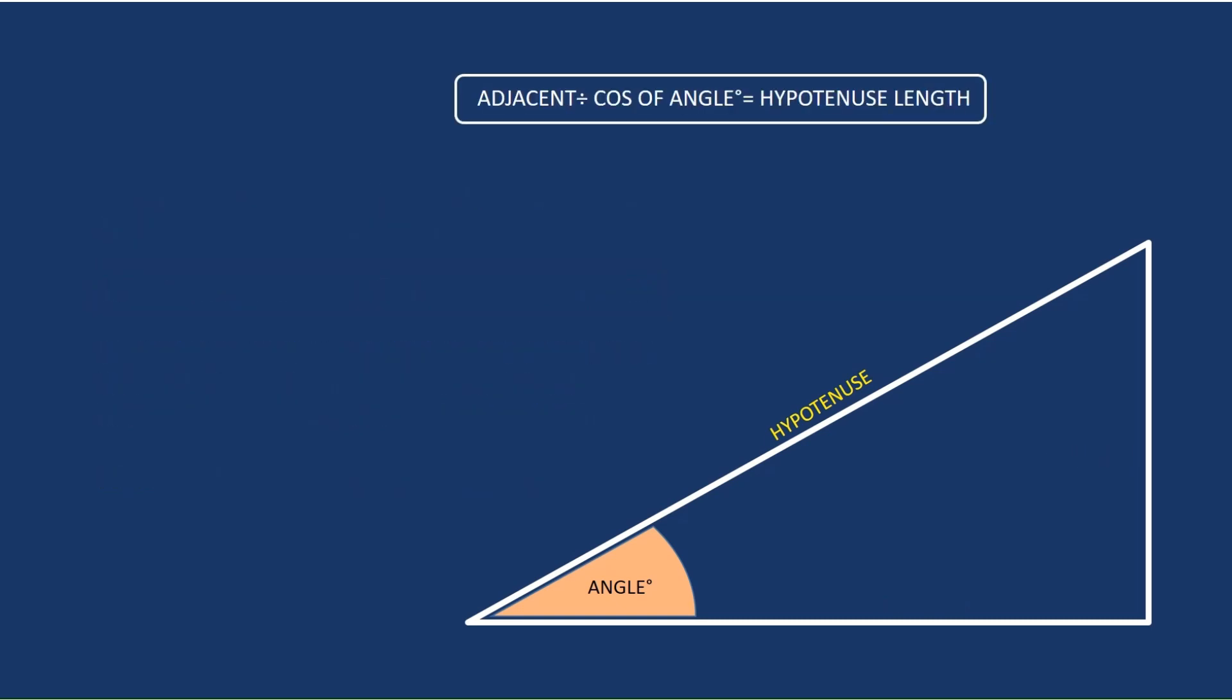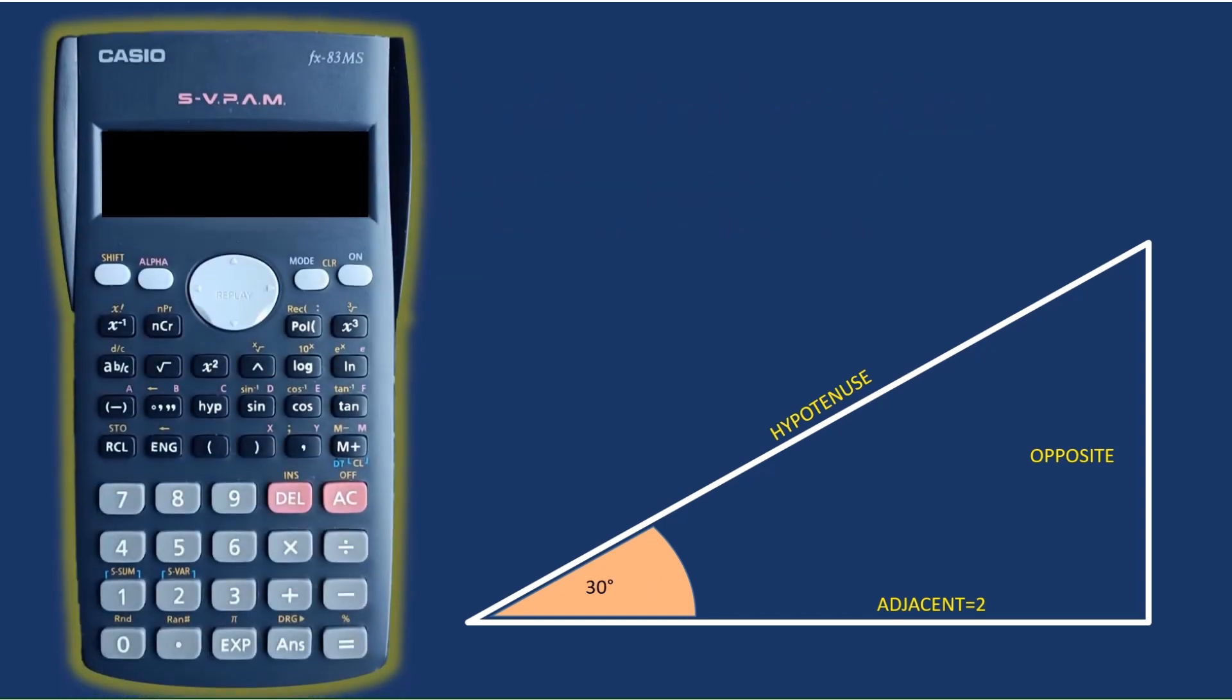So we'll just start into it here. We'll take an example for the adjacent line as being 2, which is coming into screen there now, and we'll pick the angle as being 30 degrees for this example we're going to work through.